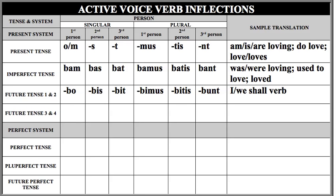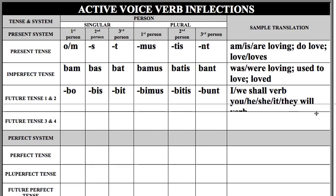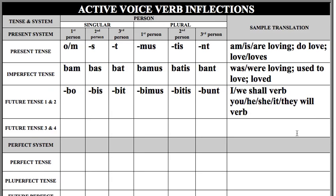With the subjects 'I' or 'we,' we say 'shall' and then whatever the verb is — 'I shall love you,' 'we shall love.' With all the other subjects — you, he, she, it, and they — we say 'will' plus the verb. So: I shall love, you will love, he will love, we shall love, you will love, they will love.